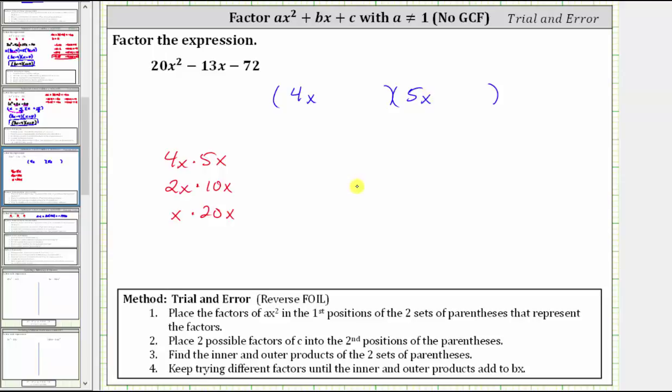The next step is to place the factors of c, which in this case is negative 72, into the second positions of the binomial factors, such that the sum of the inner and outer product gives us negative 13x, the middle term. And again, there are quite a few factors of negative 72, but we will use the factors of negative 72 where the absolute values are closest together.